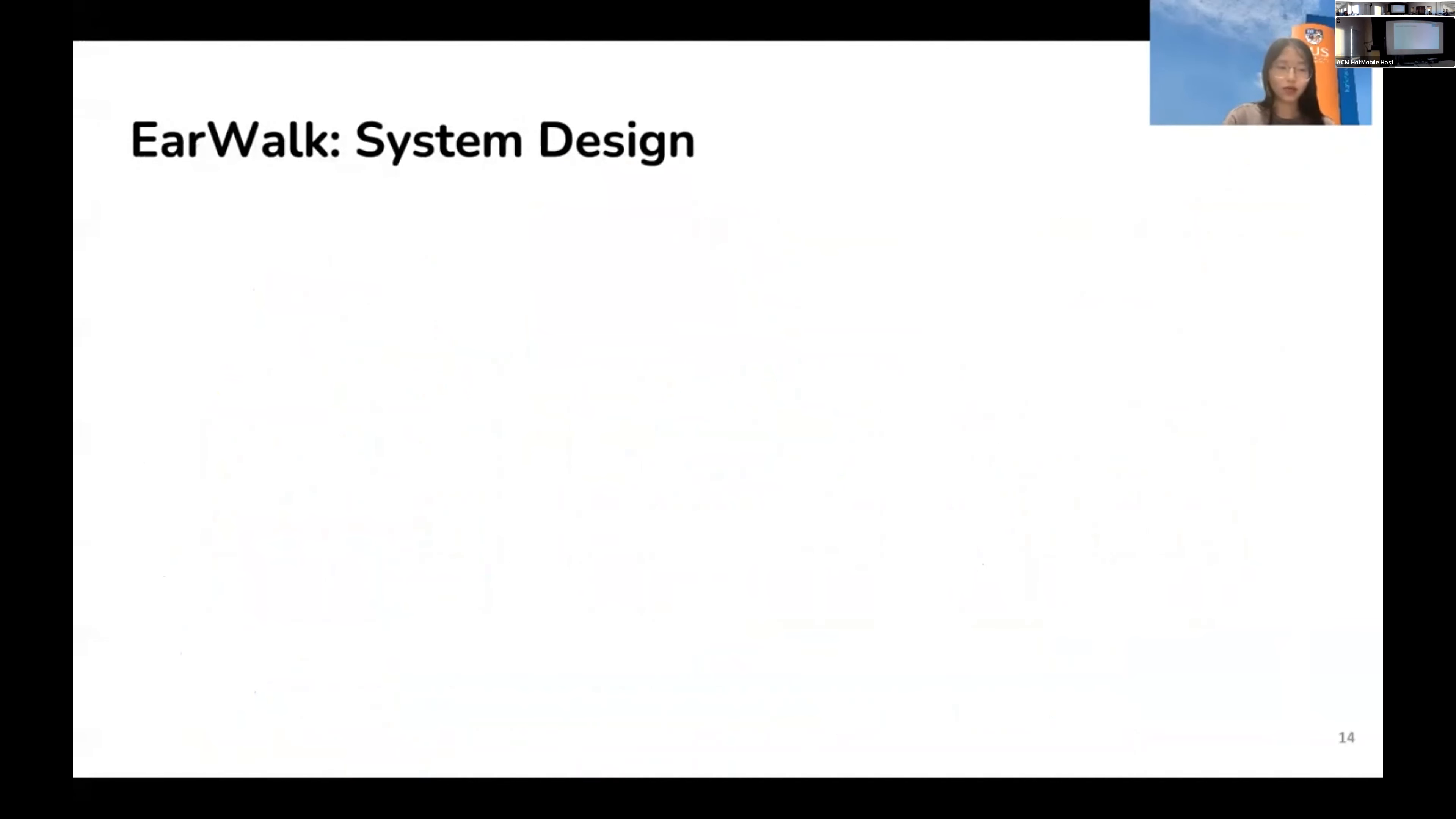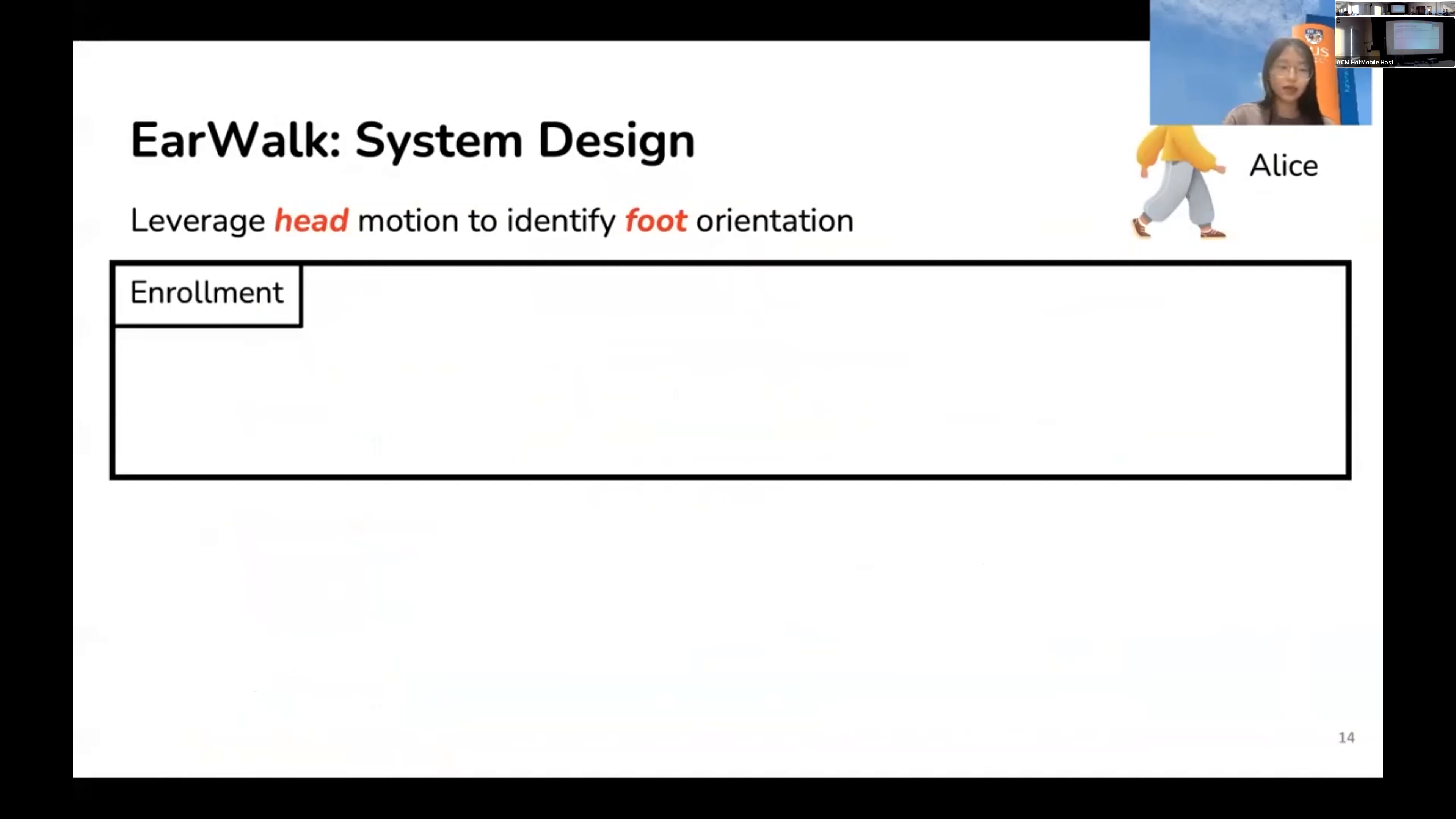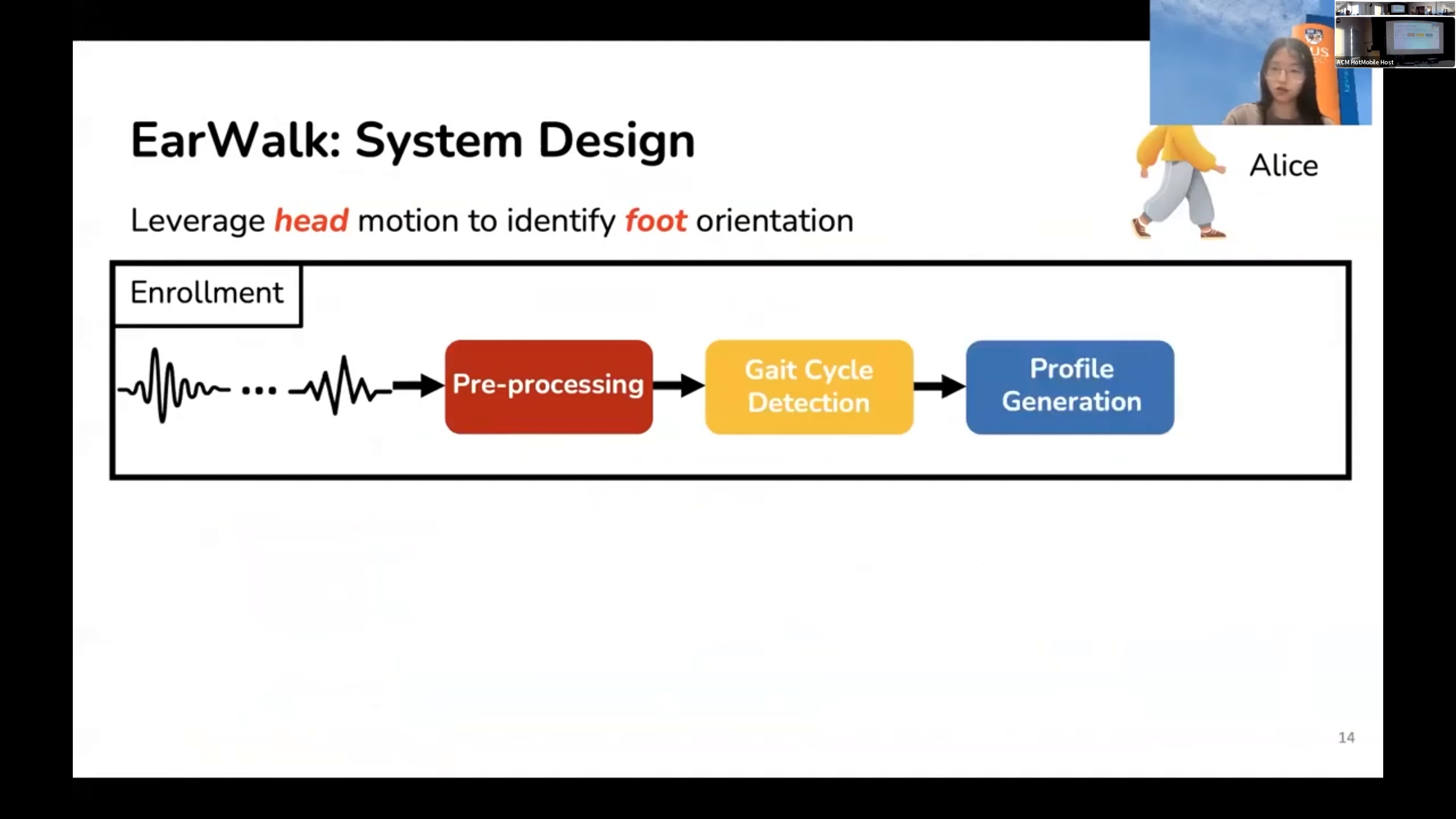Now I'll show you how we can make use of the head motion to identify the foot position. Suppose Alice wants to use EarWalk to assist her training process, and she first needs to go through the enrollment phase. In this phase, we first collect raw acceleration signals from each walking posture. From this, we perform signal smoothing and select useful features, which is then cropped based on the periodic patterns to obtain signal segments. From which, we can extract common patterns in the profile generation module and finally obtain walking profiles for each posture, which are then stored locally on the smartphone.